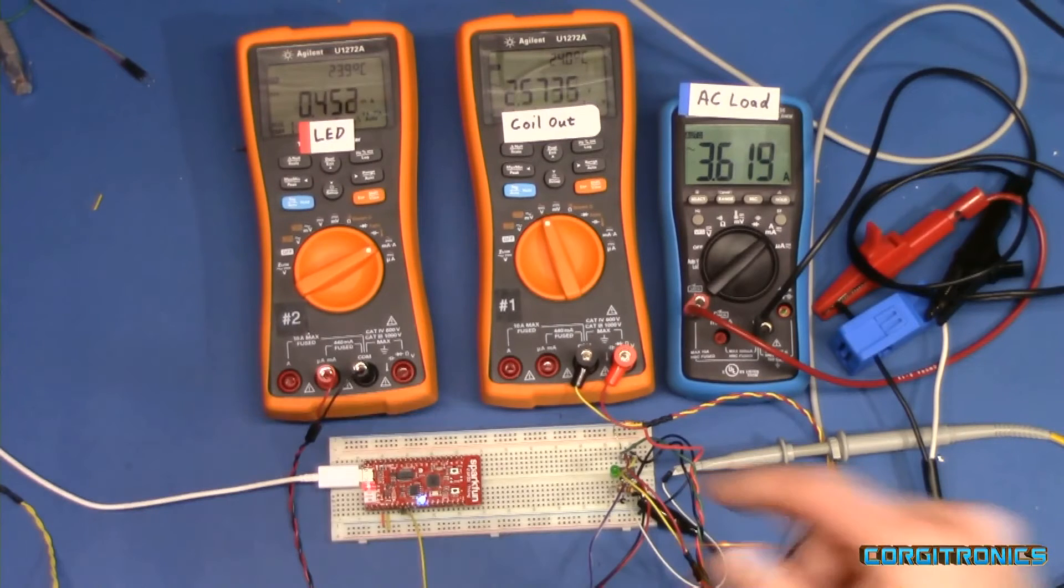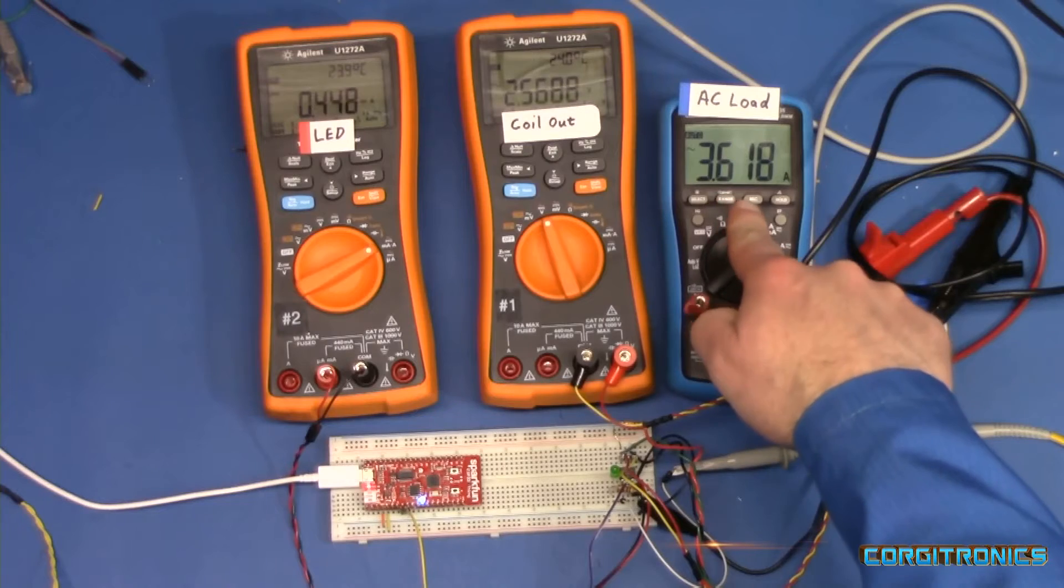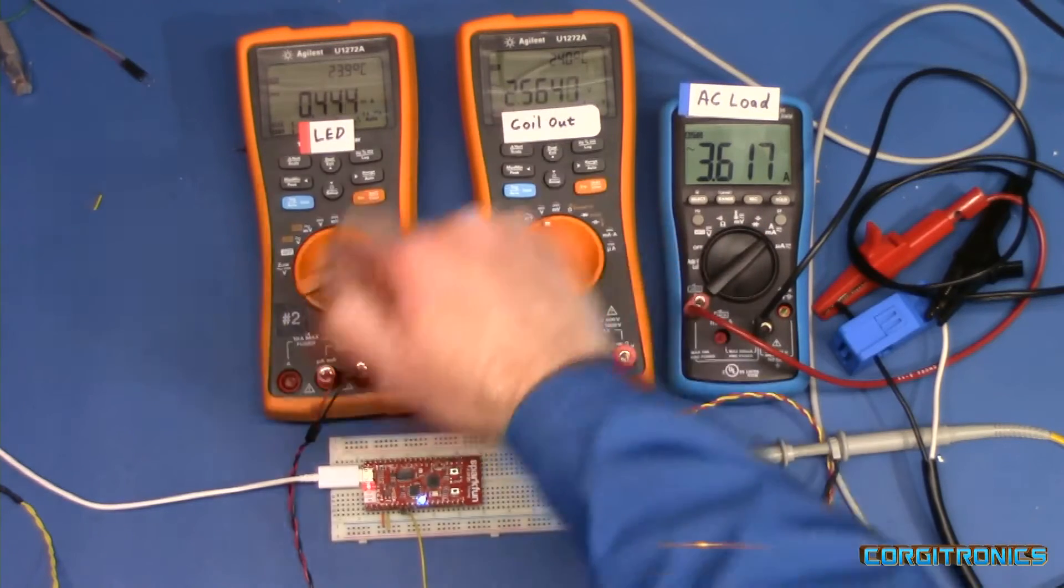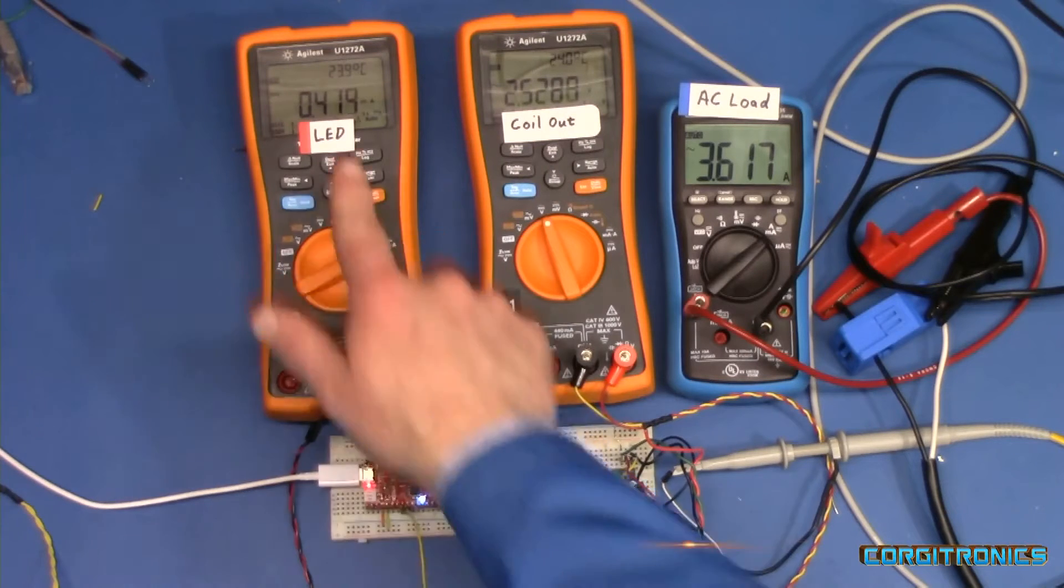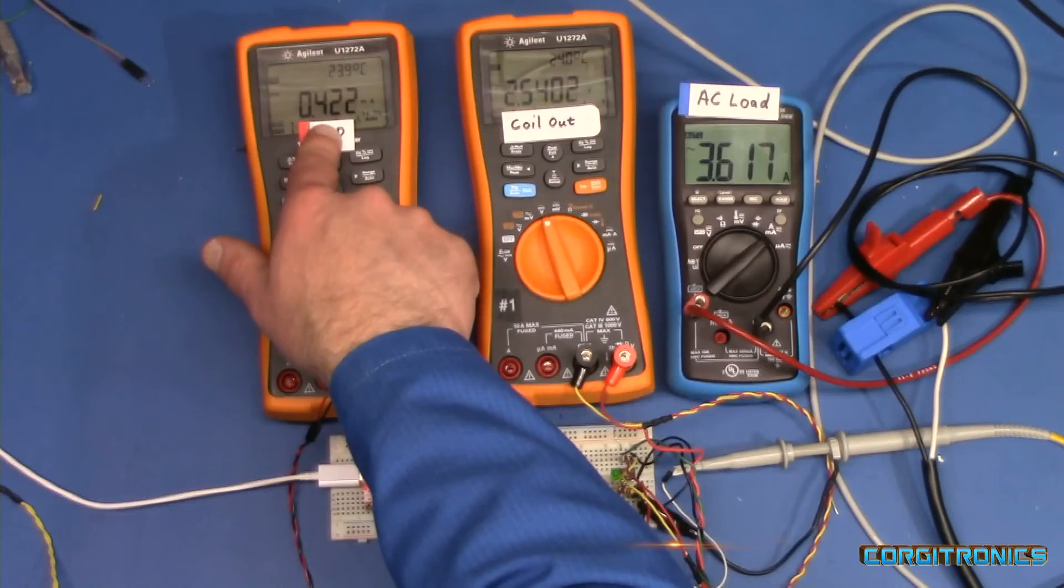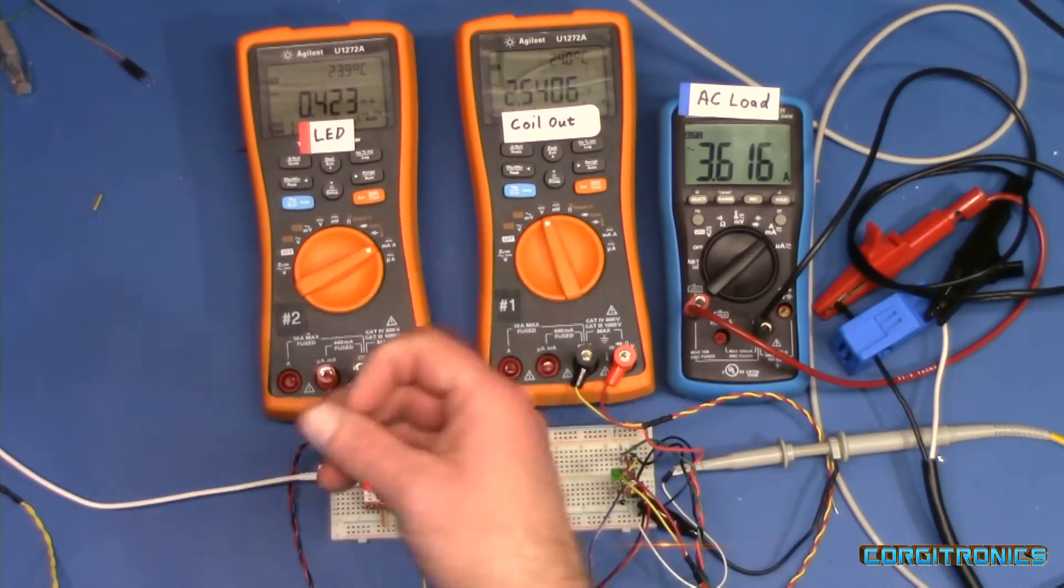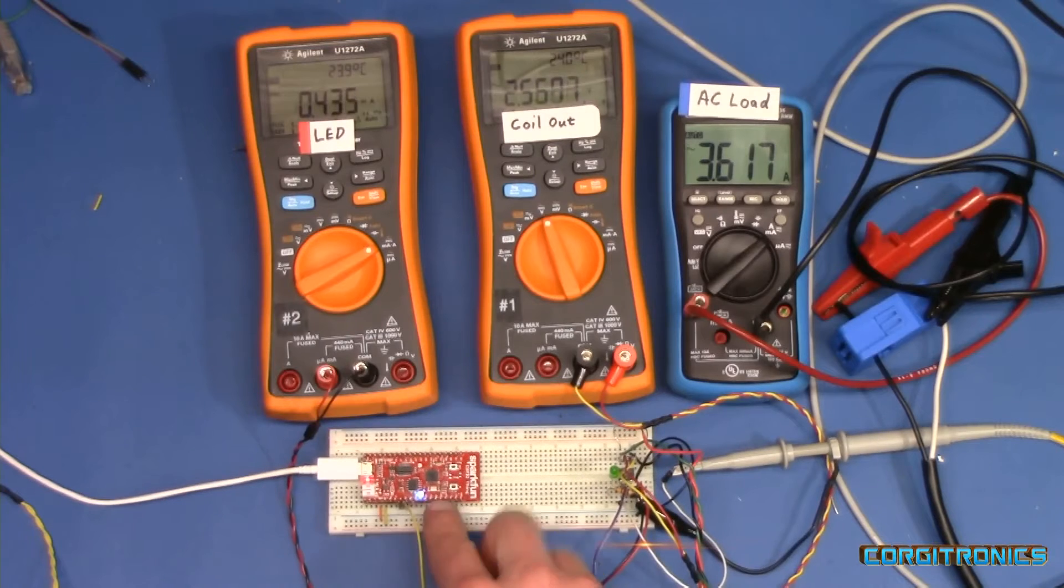And when we turn on the load, we get a nice 3.6 amps of AC power flowing through that. We're showing a coil output of 2.5 volts under load to the LED, and the LED is only getting 4.2 milliamps, or 420 microamps, not really enough to turn it on. You can see a little bit of a glow.